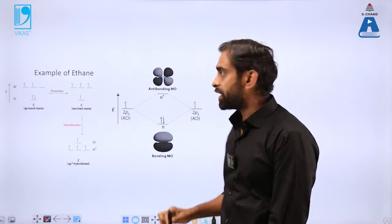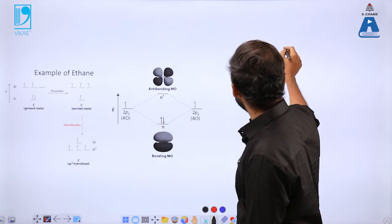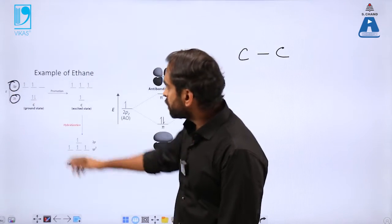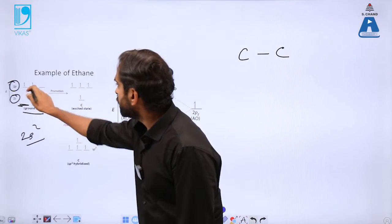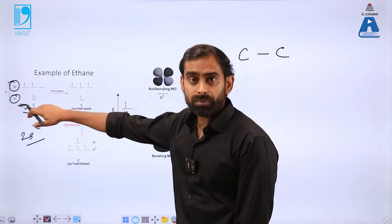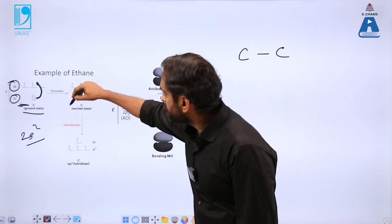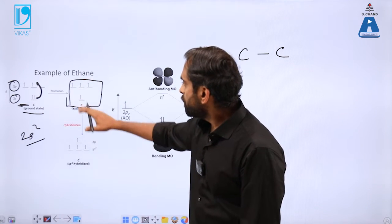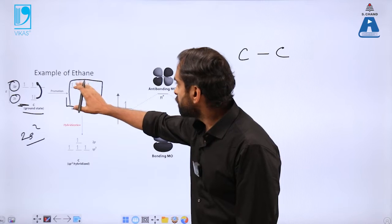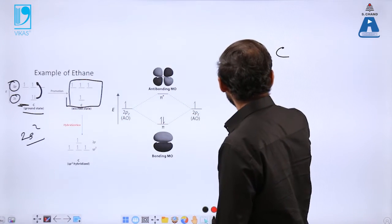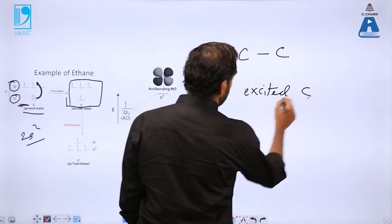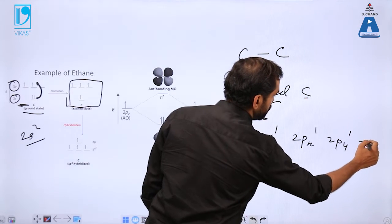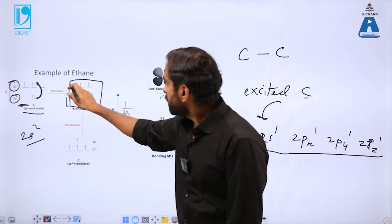Let us consider a specific example: the formation of a bond in ethane, where two carbon atoms combine. To draw the energy level diagram, first write down the valence shell energy states. Carbon has 2s² 2p² in the ground state, but before combining, carbon becomes excited — one electron jumps from 2s to 2p — giving the excited configuration 2s¹ 2px¹ 2py¹ 2pz¹. This correctly represents the excited carbon used in bonding.